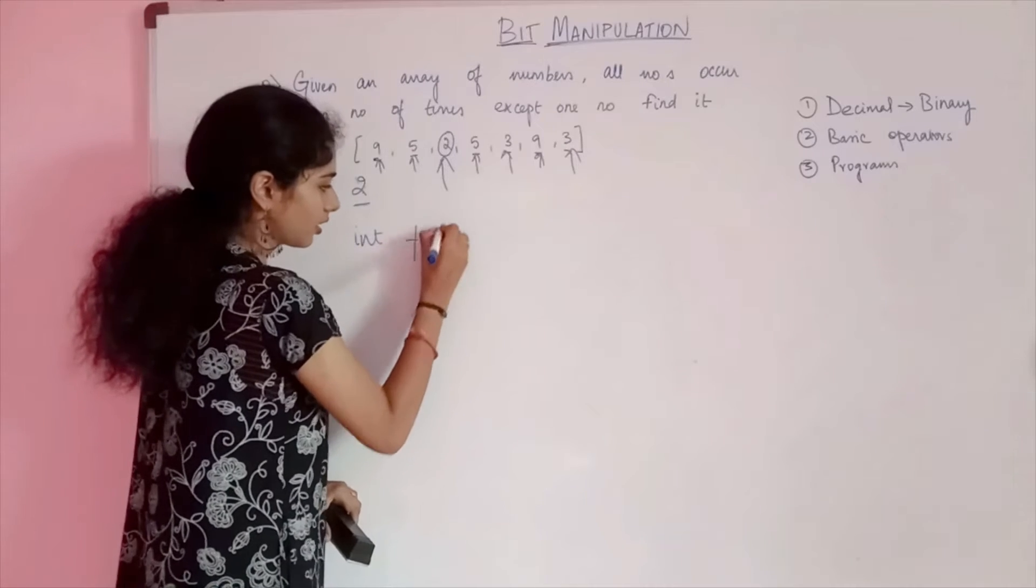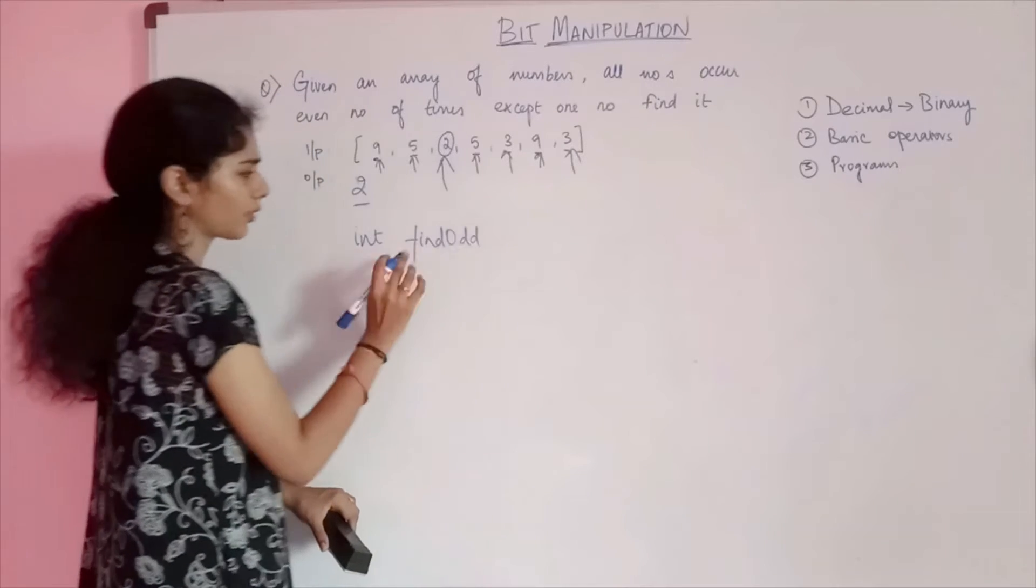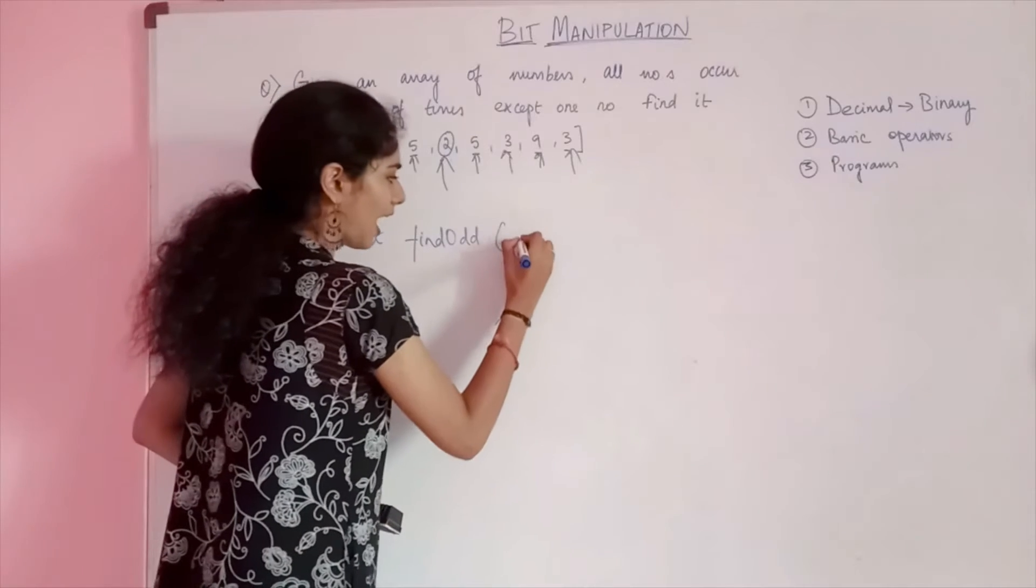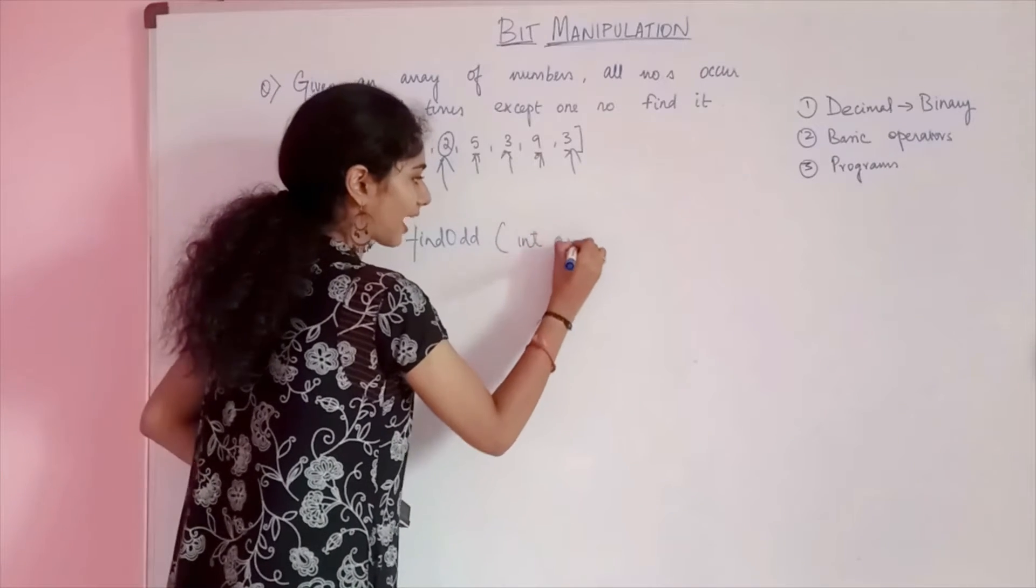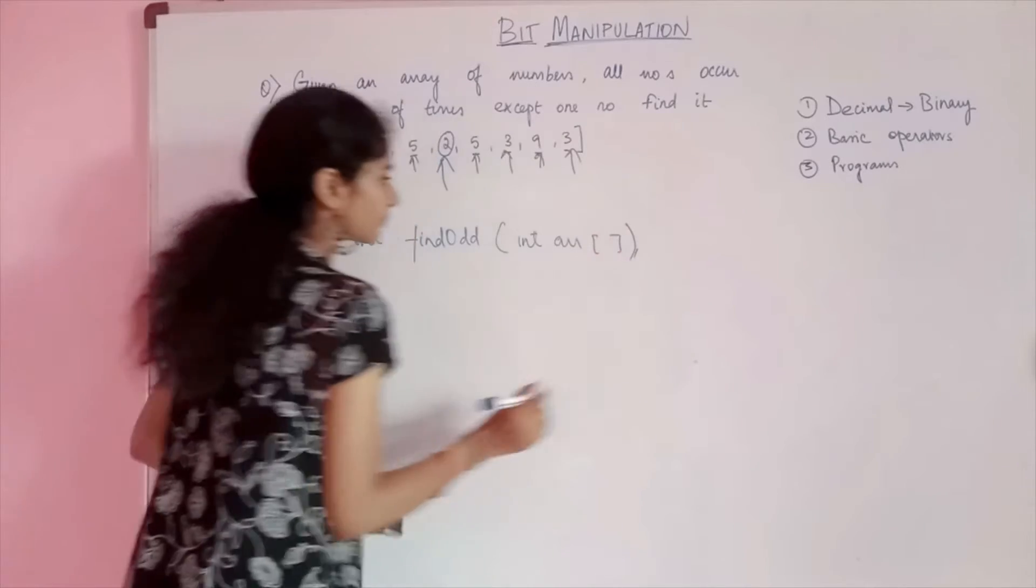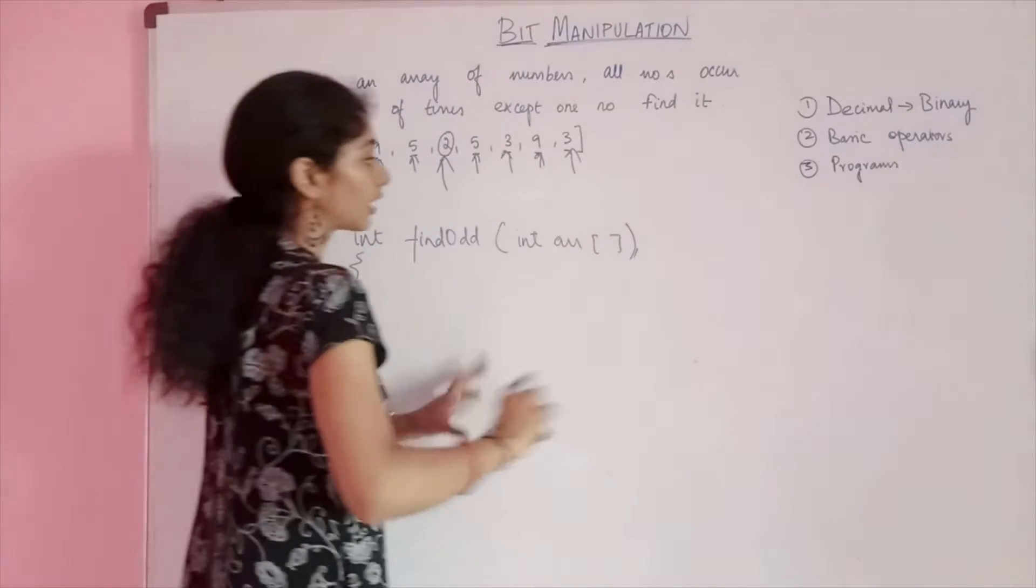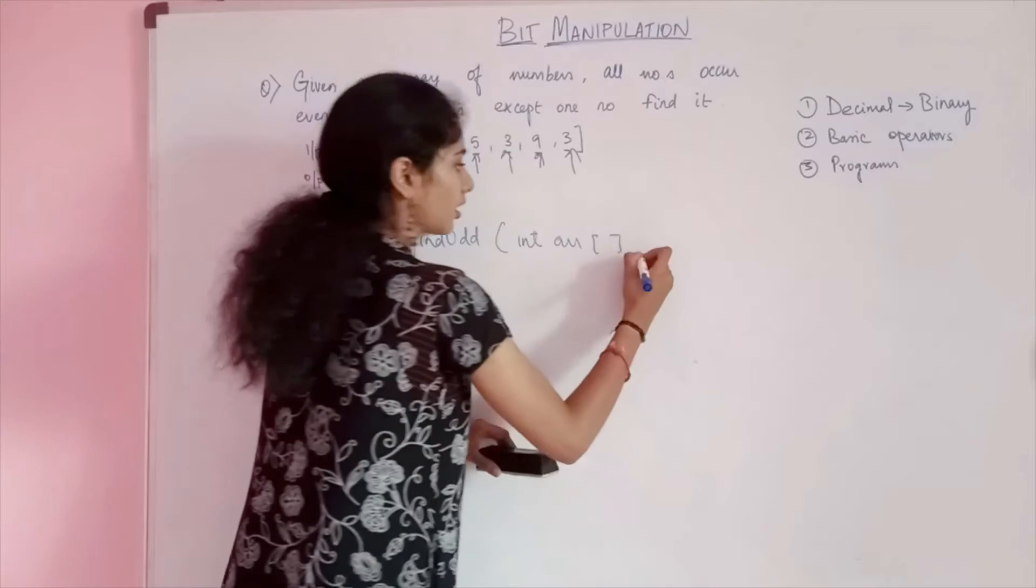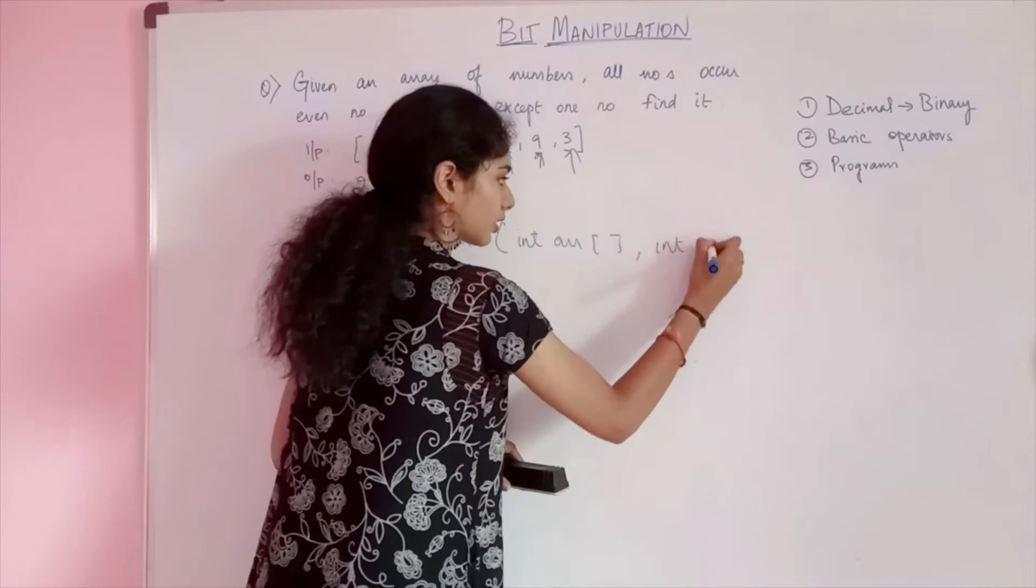So that is the basic idea we will be following. Let us return this number as an integer. int findOddOccurrenceNumber, I get this array as input and the number of elements as well.